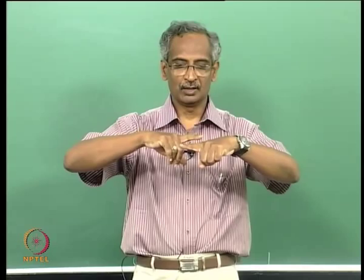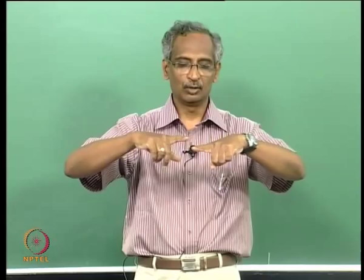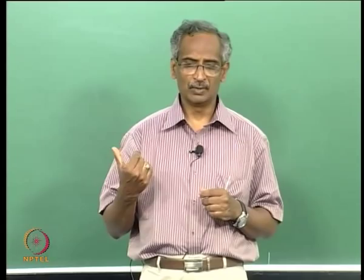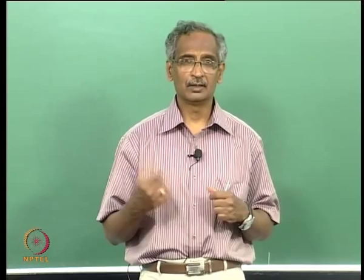In a geonet, the ribs run in two different directions and they lie in two different planes, whereas in a geogrid, both sets of ribs are in the same plane. The thickness of a geonet is much larger than that of a geogrid, because the function of a geonet is very different from that of the geogrid.